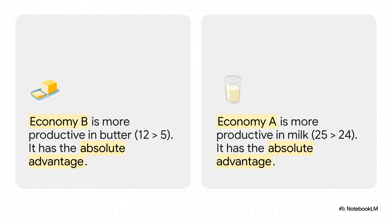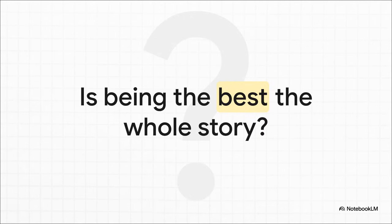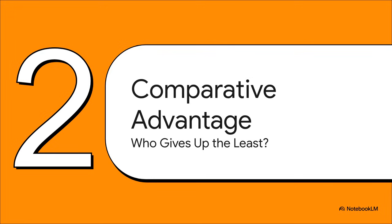Case closed, right? B makes butter, A makes milk. This is where a lot of people stop — it just seems obvious. But if that were the whole story, honestly, the global economy would be a lot less interesting. We've got to dig deeper, and this brings us to the real magic trick, the heart of it all: comparative advantage.